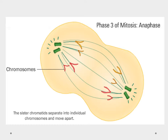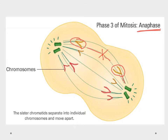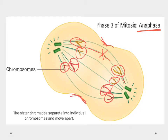In anaphase, the spindle fibers attach to the centromere of each chromosome and pull them apart. Each X-shaped chromosome is split at its centromere, producing two halves that move to opposite sides. This is how we split the cell's DNA. We also start to see a cleavage furrow forming, where the cell begins pinching inward.